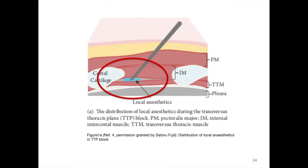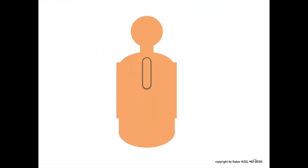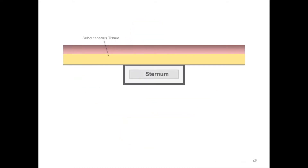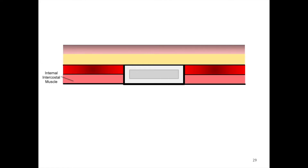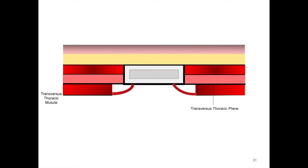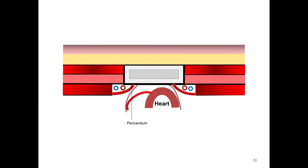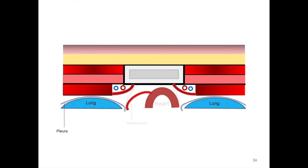As seen again in this simplified cartoon from Satura Fuji and co-workers, we will now have a view on the anatomy of the parasternal region on a transverse cross-section of the sternum. First the skin, below is the sternum, then the pectoralis major muscle, with underneath the internal intercostal muscle. Further below: the transverse thoracic plane and the transverse thoracic muscle surrounding the internal thoracic vessels. Then further posterior starts the mediastinum with the pericardium and the heart, and the neighboring thoracic cavities including the pleura and the lungs.